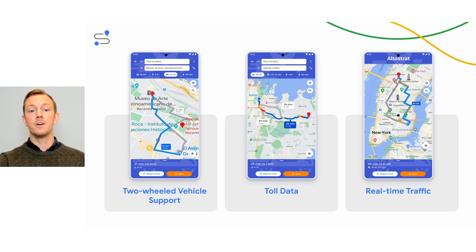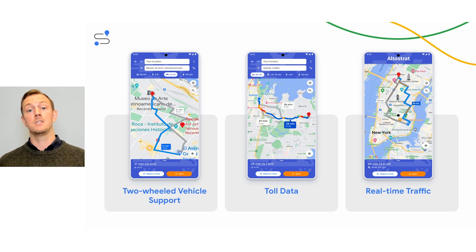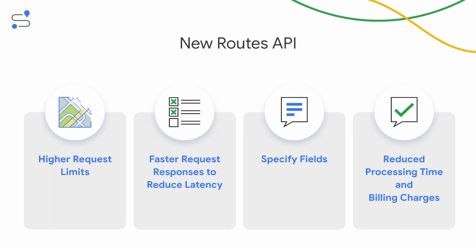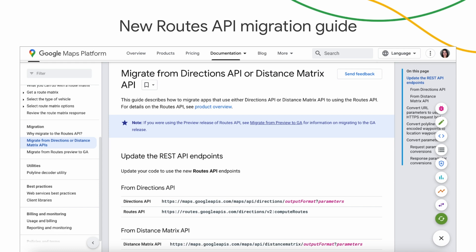Most of the functionality of Routes API is also backwards compatible with both the directions and distance matrix APIs. Key improvements include higher request limits, faster request response to reduce latency, and the ability to specify which fields to return, reducing processing time and billing charges. We have a detailed migration guide available that will allow you to easily identify updates you need to make to transition from distance matrix and directions APIs over to the new Routes API. We want to make this as easy as possible for you.